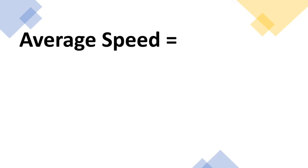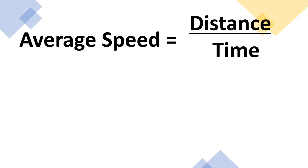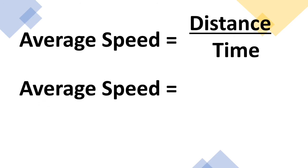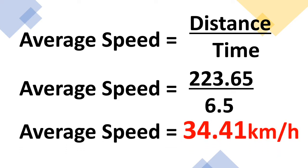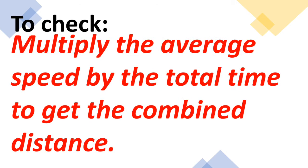Now, average speed is equal to distance divided by time. So following the formula, we have 223.65 divided by 6.5, which gives us the answer 34.41 kilometers per hour. To check if your answer is correct, multiply the average speed by the total time to get the combined distance.